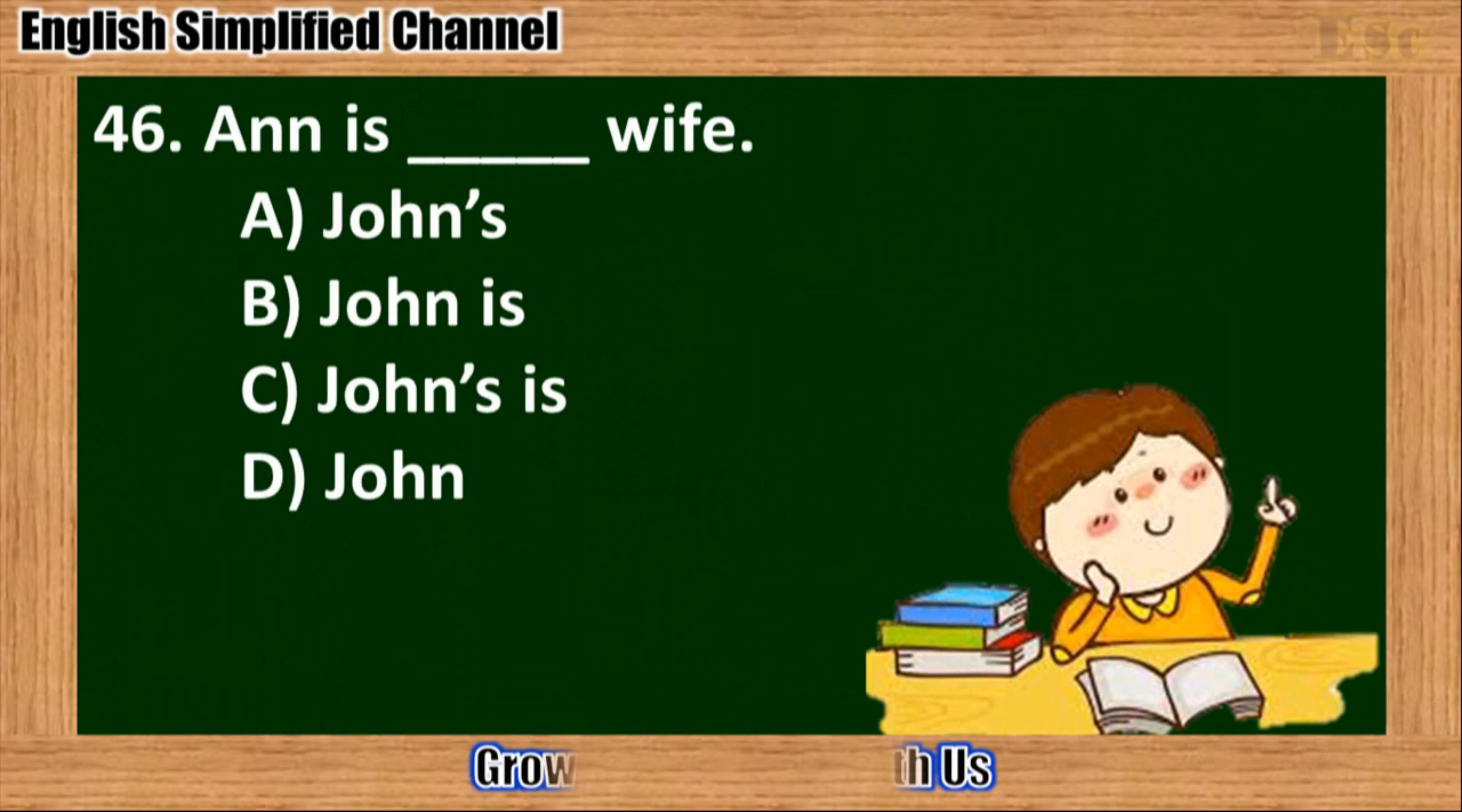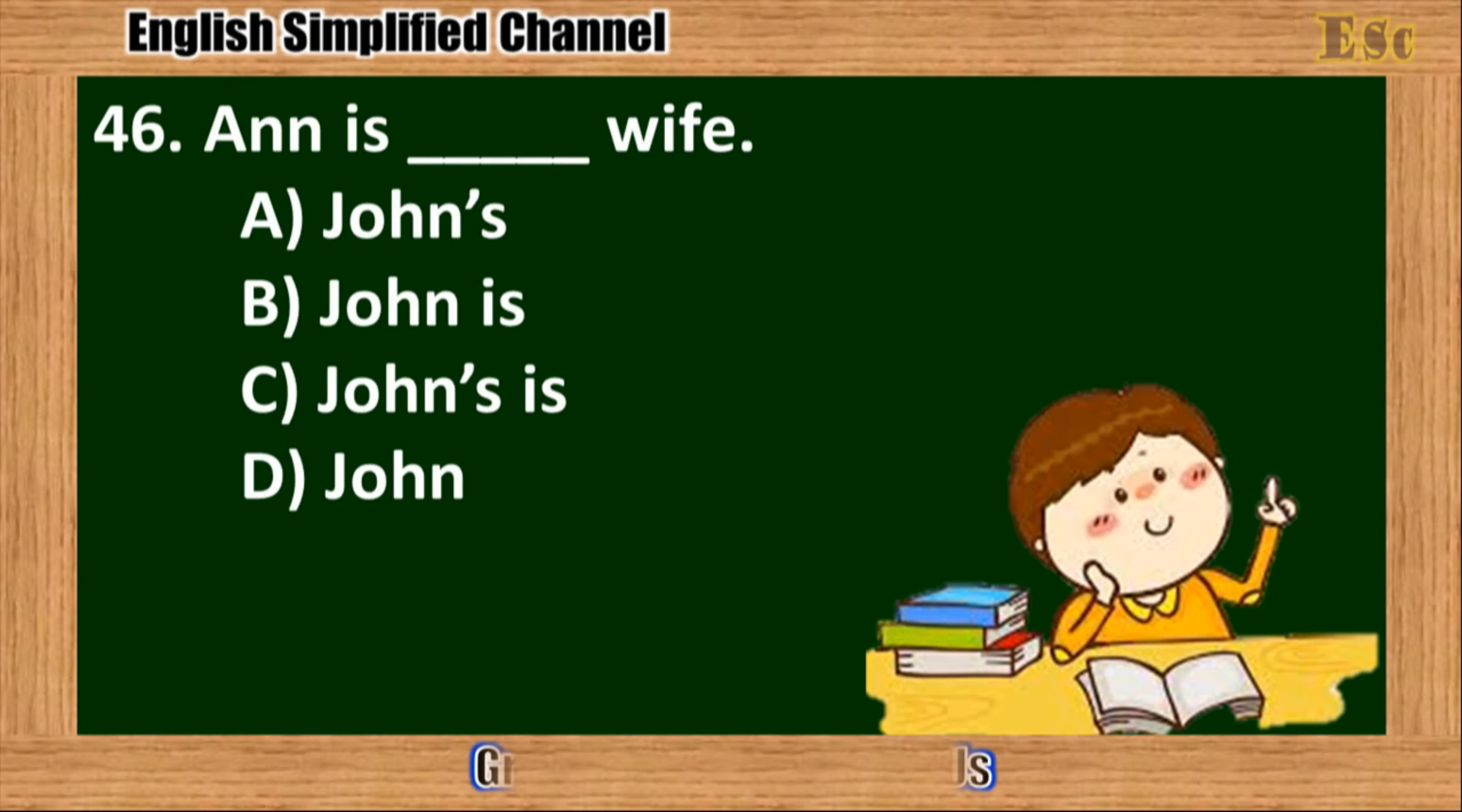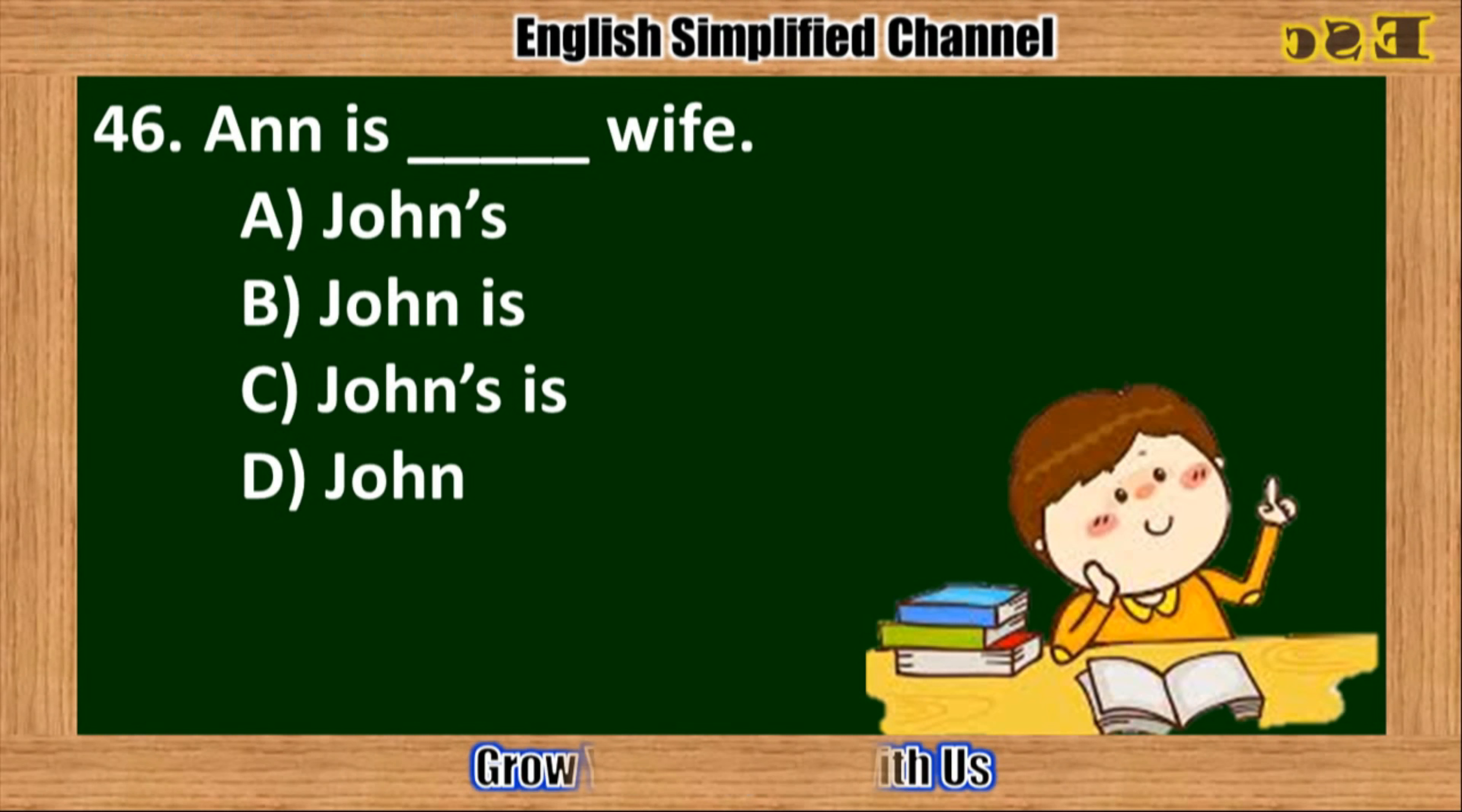46. Ann is wife. A. Johns. B. John is. C. Johns is. D. John.